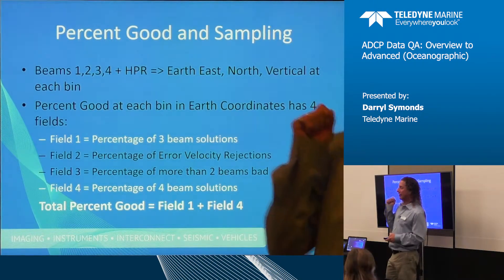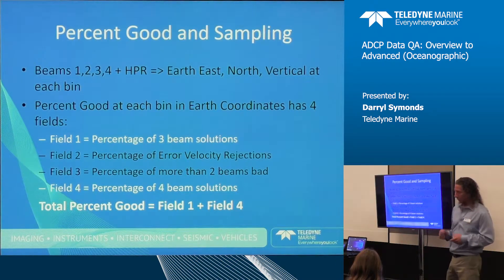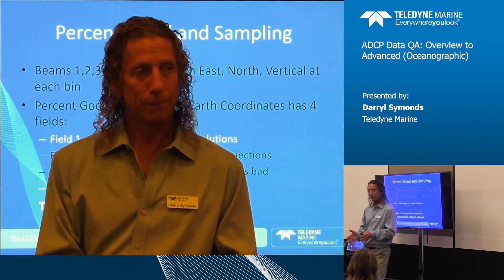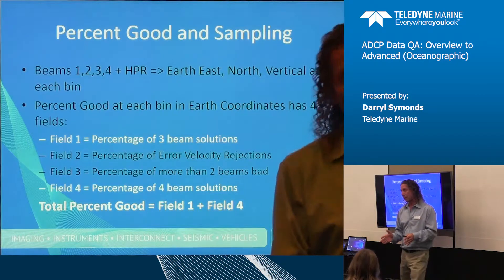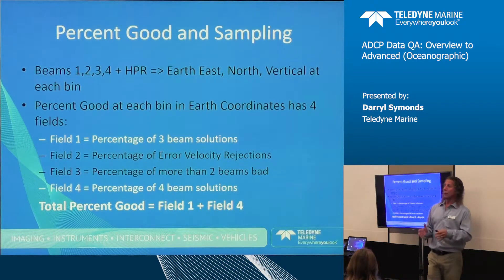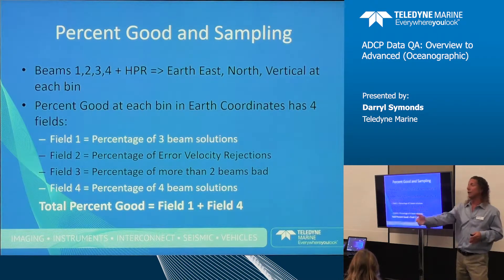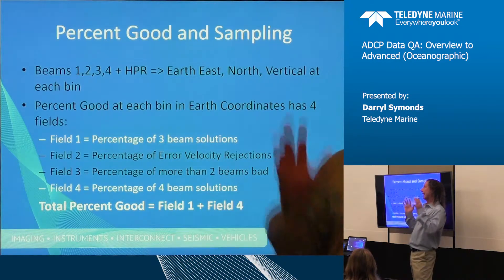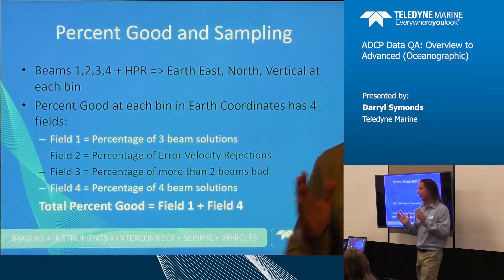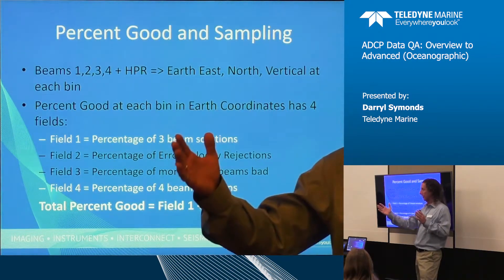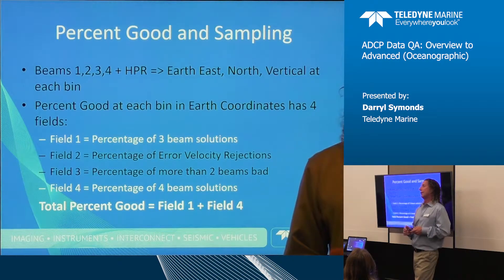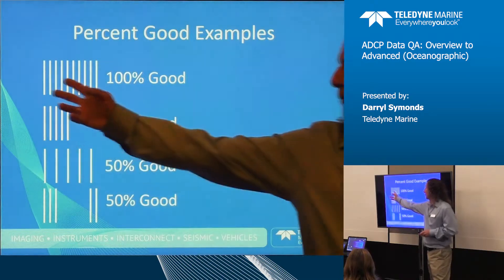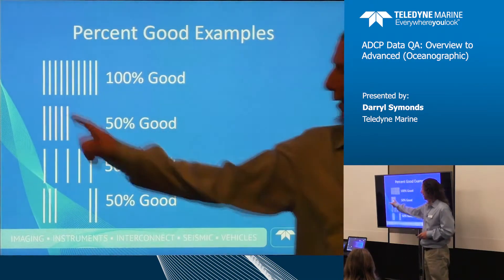Why do I spend the time to explain all this about percent good? Remember, you want to take a number of samples so that you accurately measure what you're trying to measure. The number of samples gives you an idea of your expected standard deviation — you base your whole setup on how many pings you're going to collect, and then you have to know how many are valid. You can't just say 'I'll set it up for 100 pings so that 50 good pings will be all right,' because we're not telling you where the bad data is.